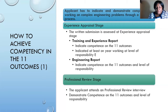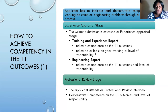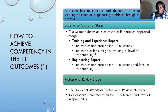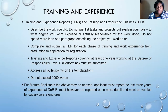The engineering report you submit also needs to indicate competence on the 11 outcomes as well as the level of responsibility. At the Professional Review stage, when you attend the interview — in person or via MS Teams — you need to demonstrate competence on the 11 outcomes. At the EA stage it was only your submission being assessed, but at the PR stage you are there in person.